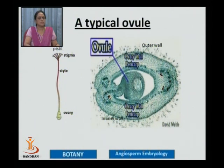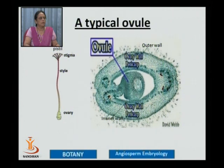In this figure, you can see that when we take the transverse section of the ovary, we can clearly see two wall layers — the inner wall and the outer wall of the ovary. From the inner wall, we can also see some bulging tissue which is developing, known as a placenta, and on this placenta the whole ovule is developing.